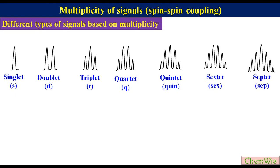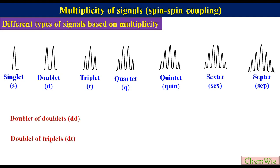We will discuss in the later part of this lecture under which condition which type of signal results and what is the intensity ratio of the peaks in a signal. There are a few more types of signals like doublet of doublets, doublet of triplets, triplet of doublets, triplet of triplets, etc., that we will discuss in a separate lecture.